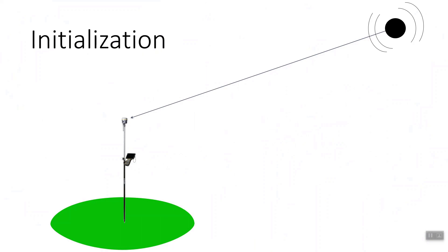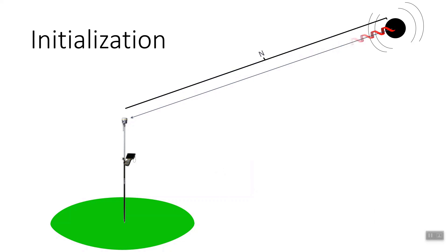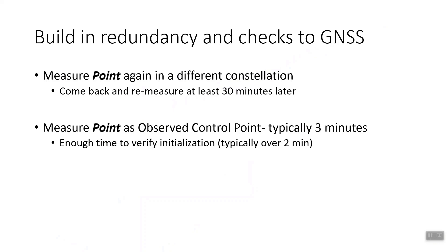Another thing that's critical is initialization. Every time you start a survey, each one of the satellites being tracked — the receiver calculates a distance to each one of those satellites. If it can repeat that distance, you'll hear the voice say 'initialization has been gained' on the older receivers, and you get a check mark on the newer receivers. Initialization calculates the distance to each of those satellites in a consistent way, so it can get a repetitive measurement to each of the satellites.